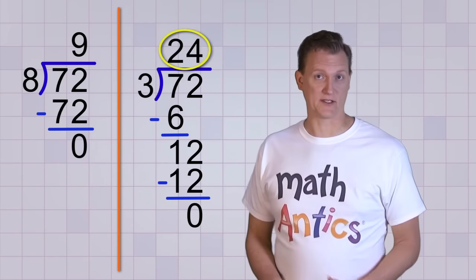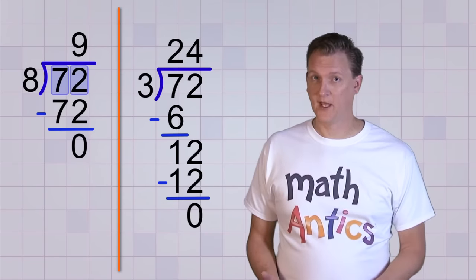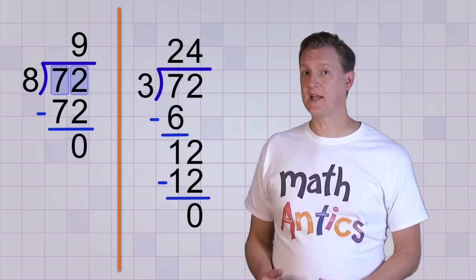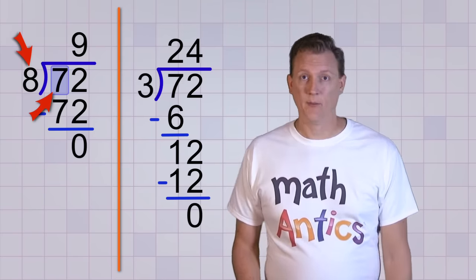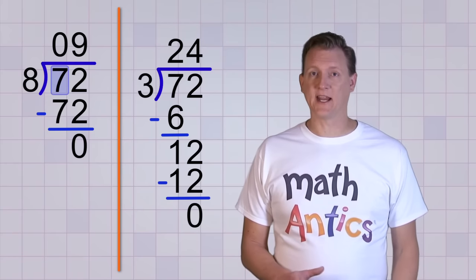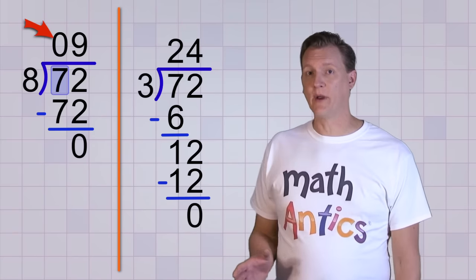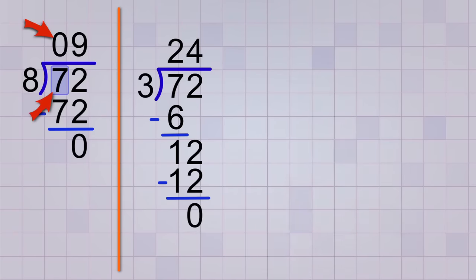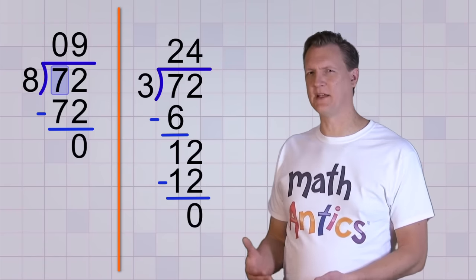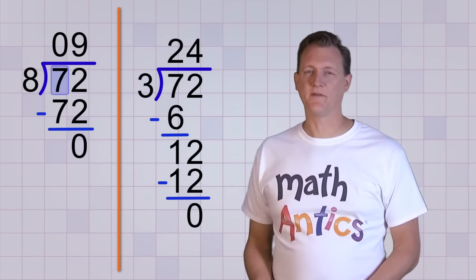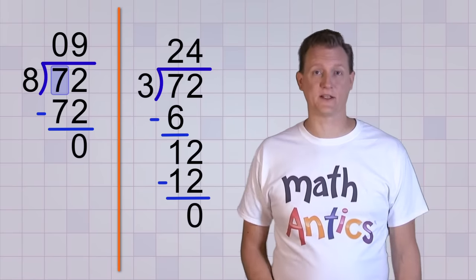Now here's the interesting thing about these examples. The first problem could have been a 2 step problem also. If we had taken it digit by digit, we would have first asked how many 8's does it take to make 7, or almost 7. But the answer would have been 0, since 8 is too big to divide into 7. We would have put 0 in our answer line, and the remainder would have just been 7. So basically, we just skip that step. And that'll happen with digit by digit division sometimes. If the number is too small to divide into, you just put a 0 in the answer line, and you move on to the next digit.